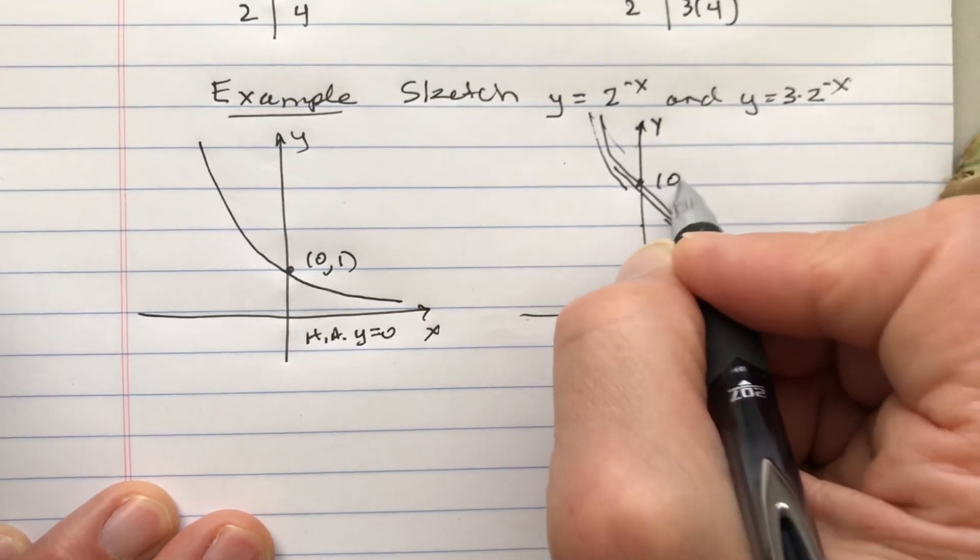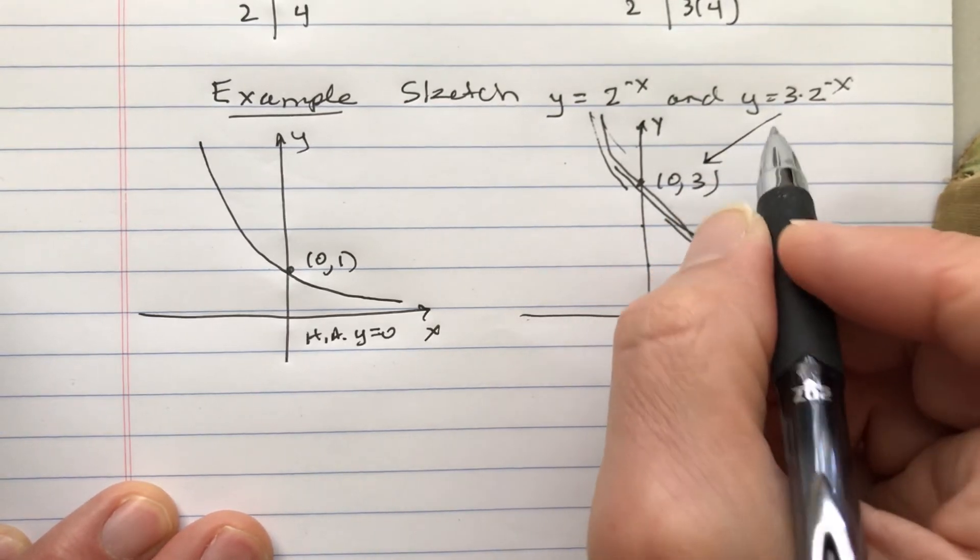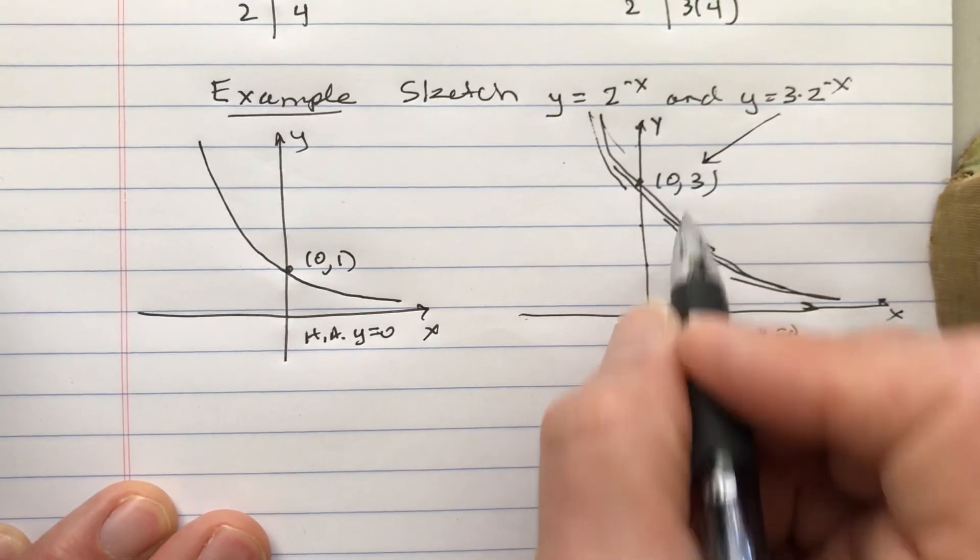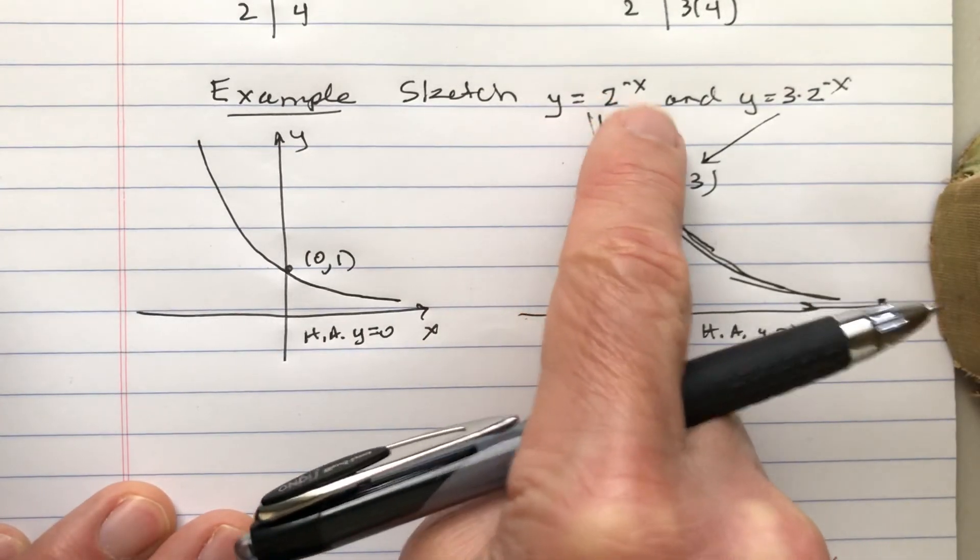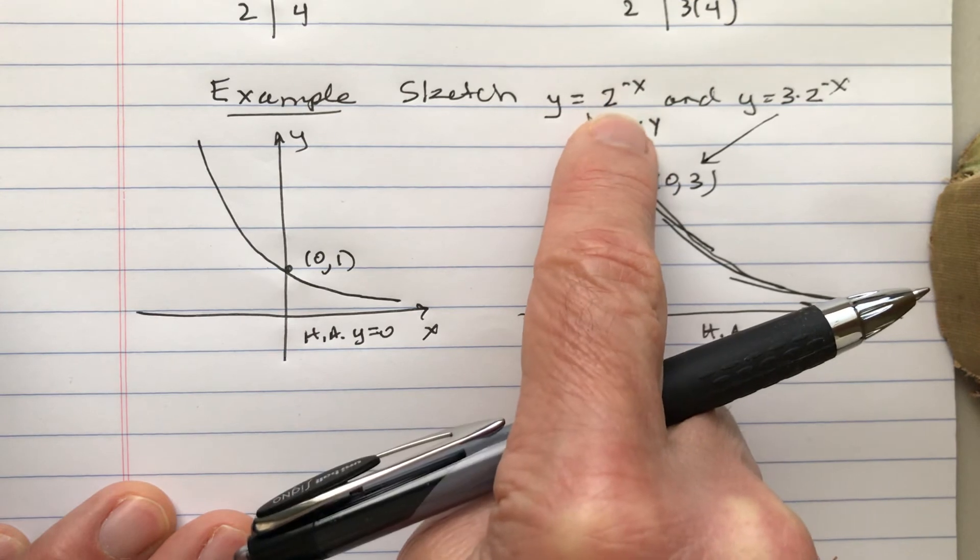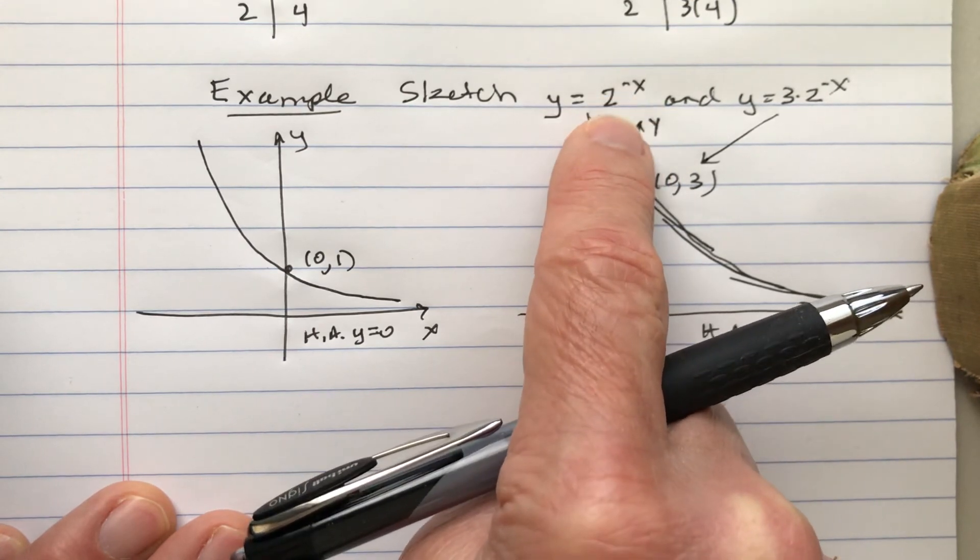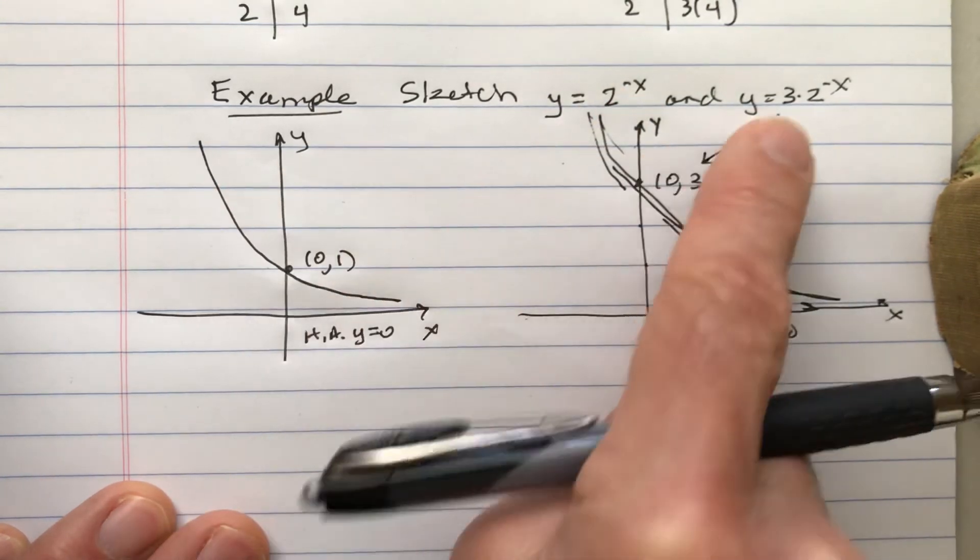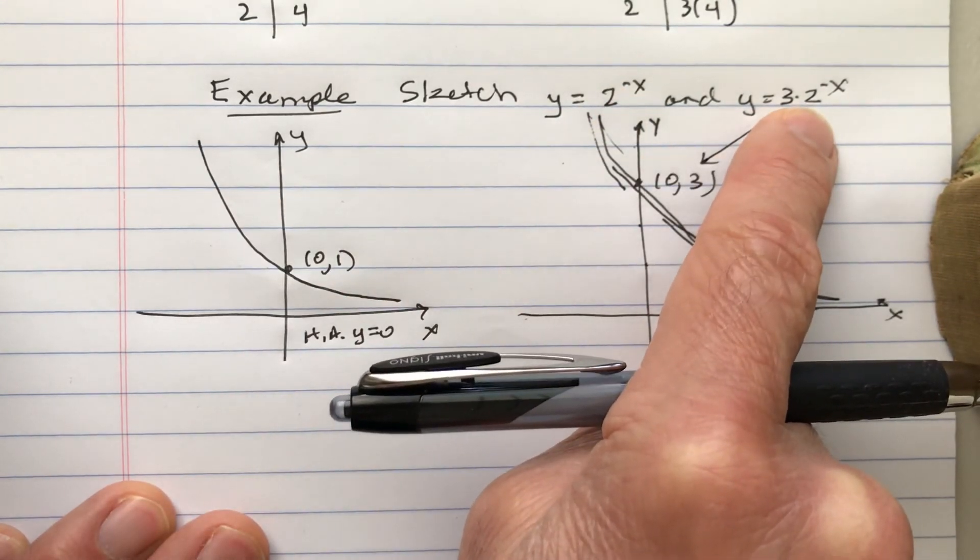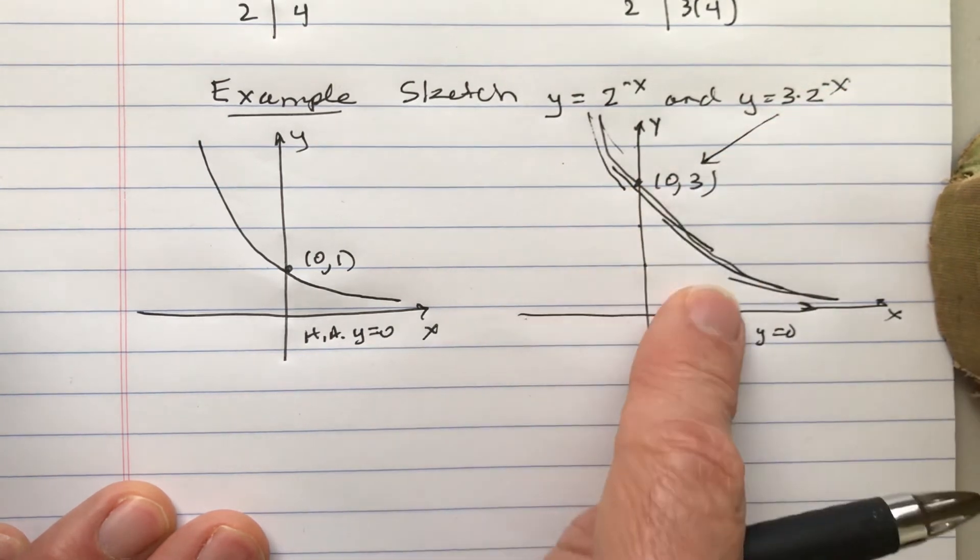But what's the big difference is the y-intercept becomes 3 now. They're both decaying. Notice this is 2 to the minus x. If you have a number greater than 1 to the minus x or a negative number times x, it's going to be decreasing. We have 2, a negative number times x, so it's decreasing.